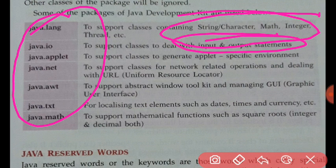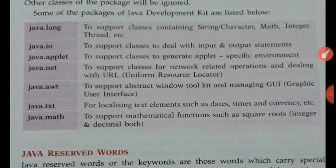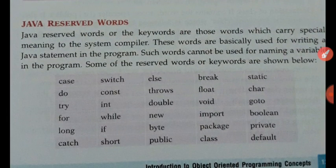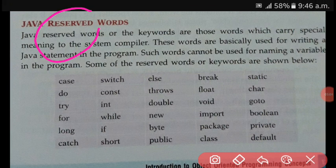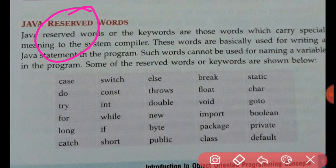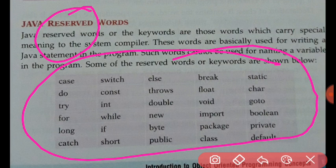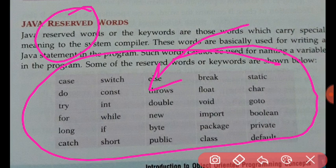Next is Java reserved words. The meaning of 'reserve' is something reserved for a special purpose. In Java, some words are kept reserved for special purposes. Whatever purpose is defined for these words, only for that purpose we can use them — we cannot use them for any other purpose. There are 48 keywords in Java. You only need to remember two or three to start.